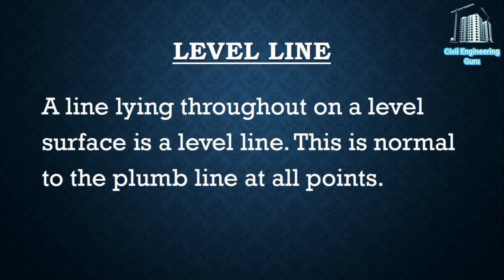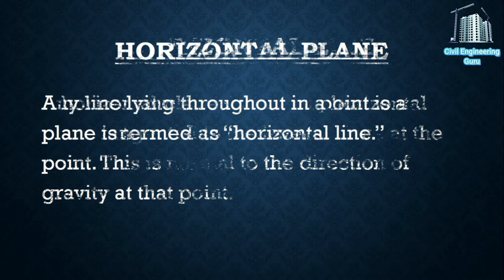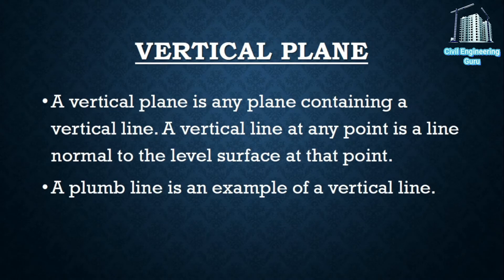Every point on the level surface is equidistant from the center of the earth. Level line: a line lying throughout on a level surface is a level line; this is normal to the plumb line at all points. Horizontal plane: a horizontal plane through a point is a plane tangential to the level surface at that point, normal to the direction of gravity. Horizontal line: any line lying throughout in a horizontal plane is termed a horizontal line.